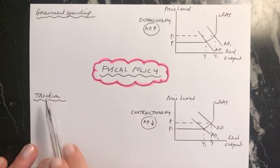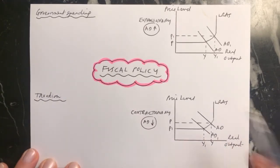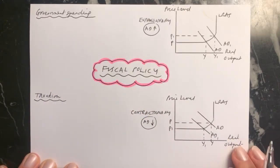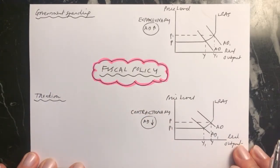Fiscal policy is to do with government spending and taxation. Either this or this or both of them can be changed so that you can impact aggregate demand.